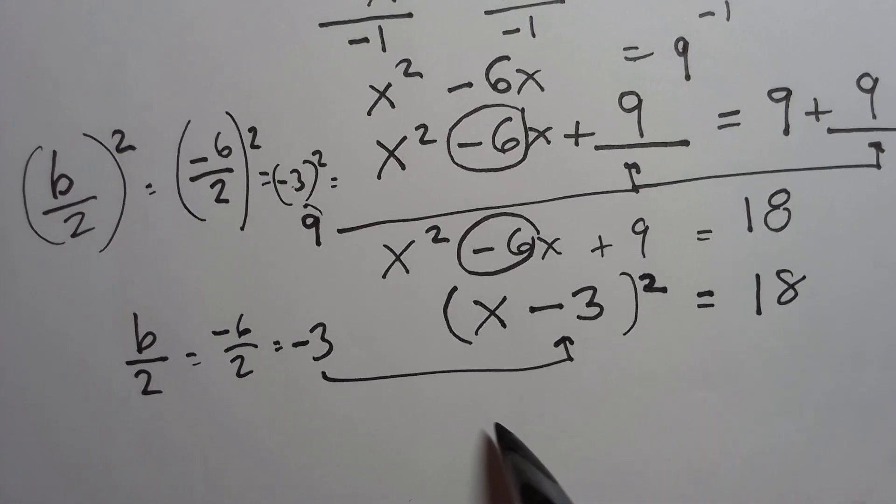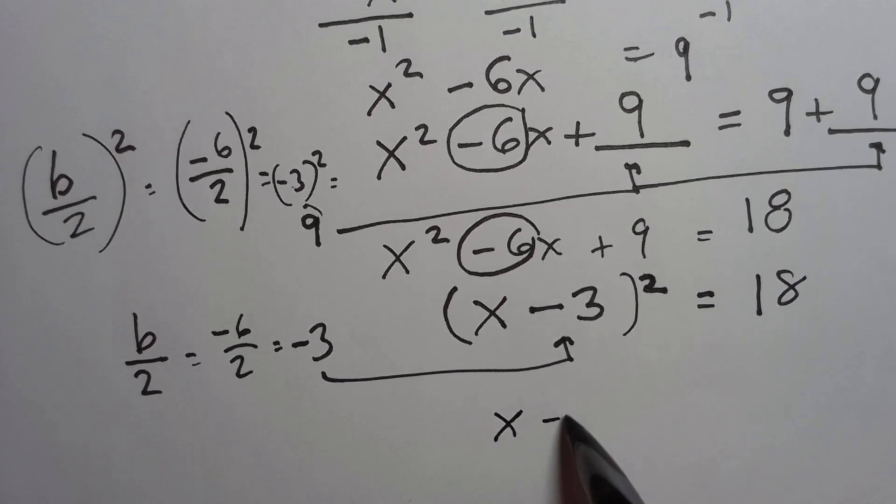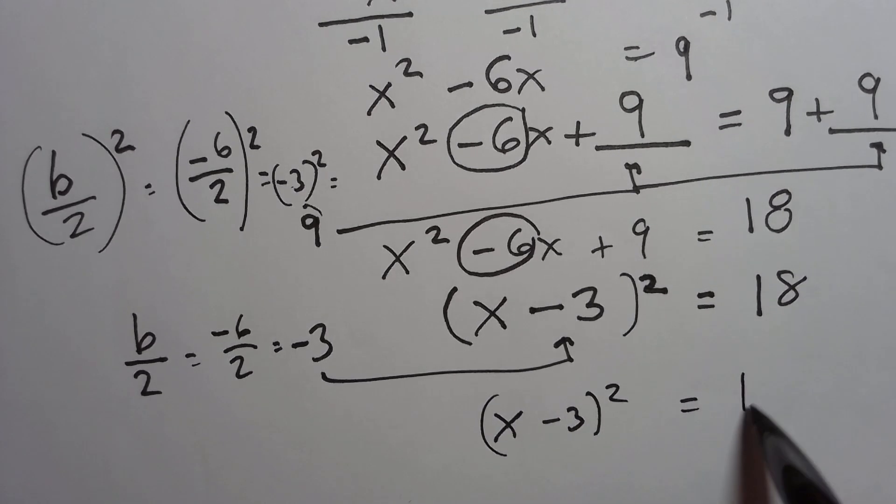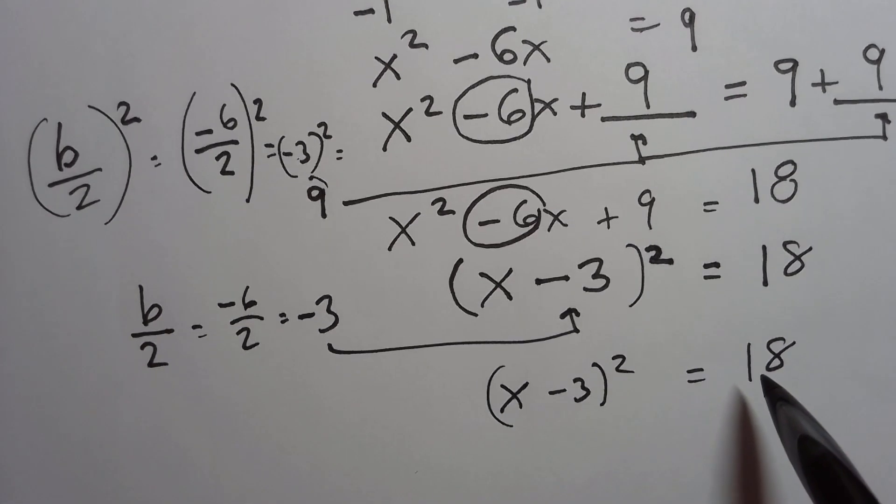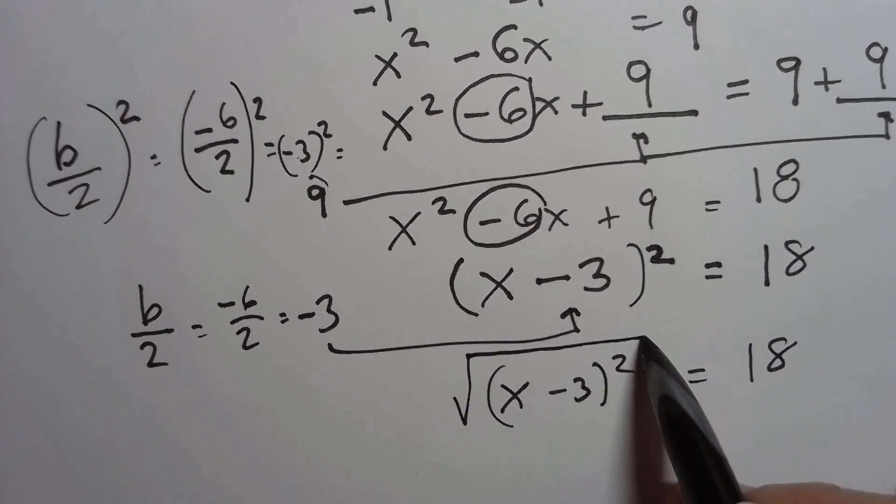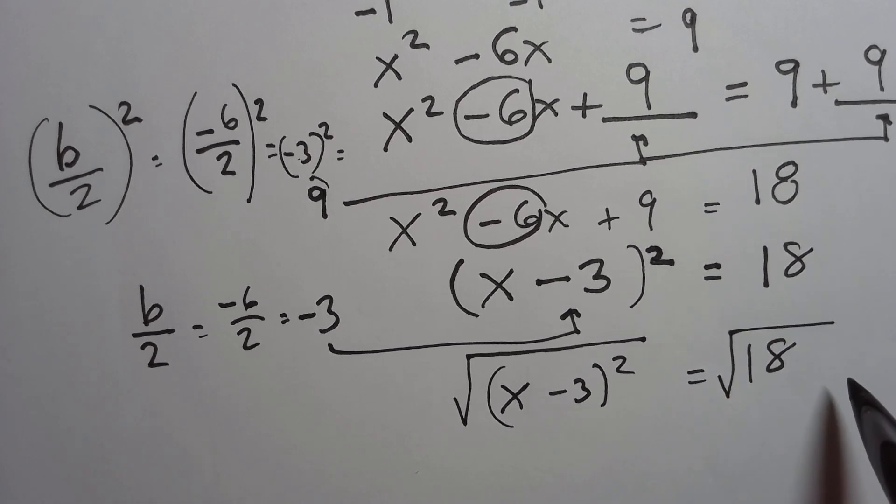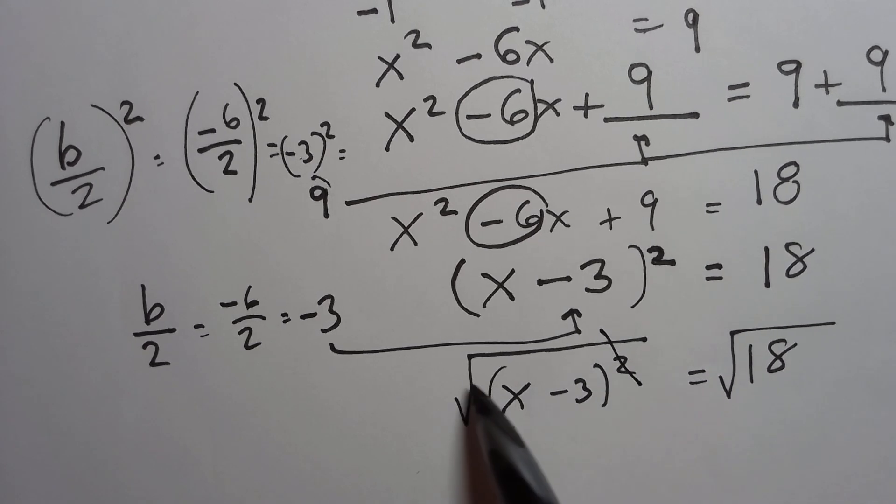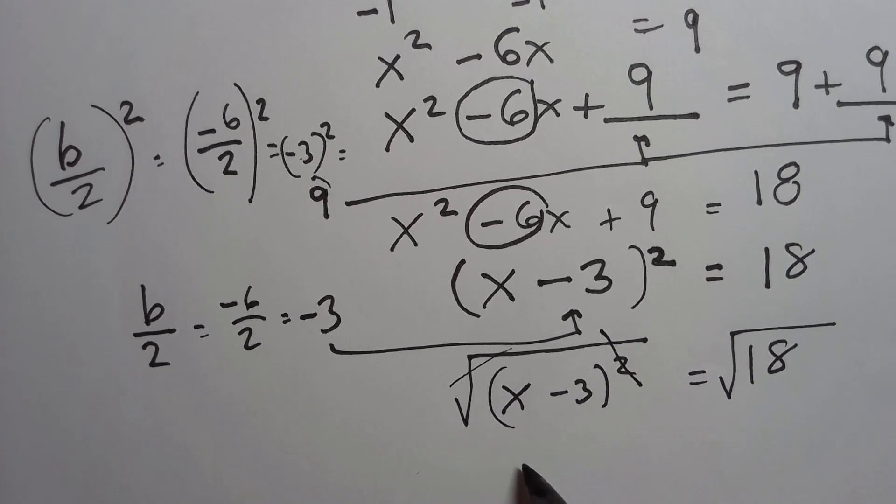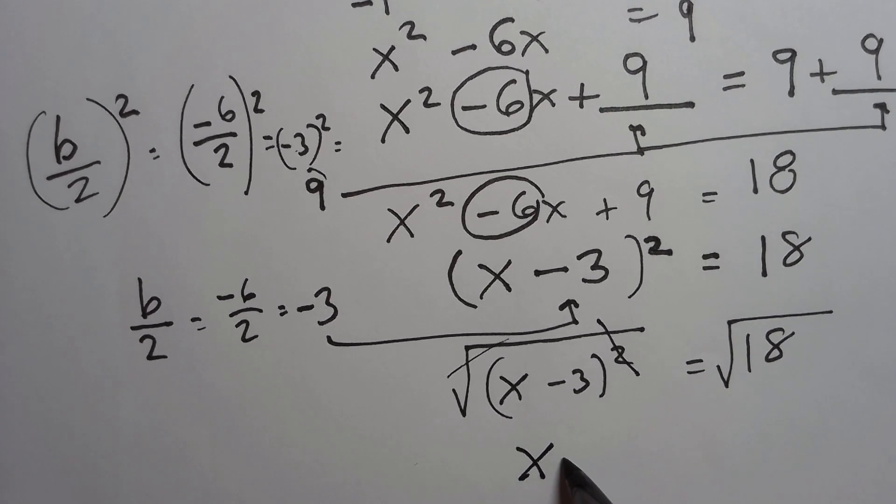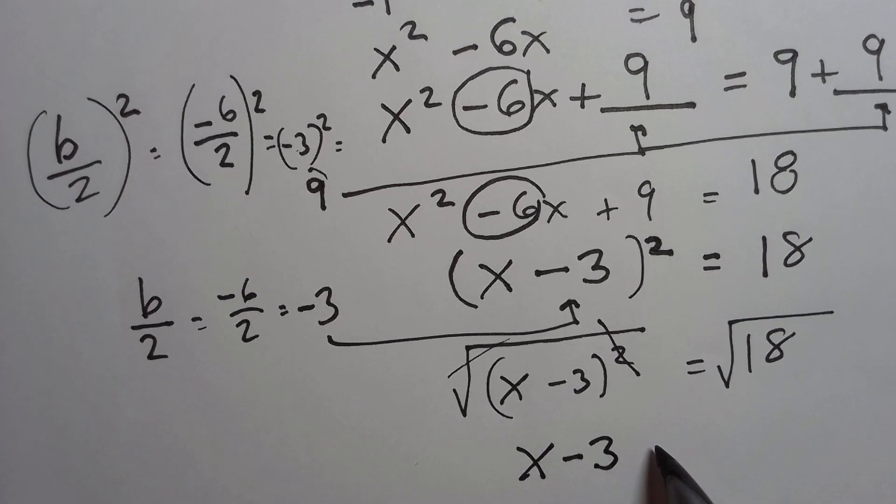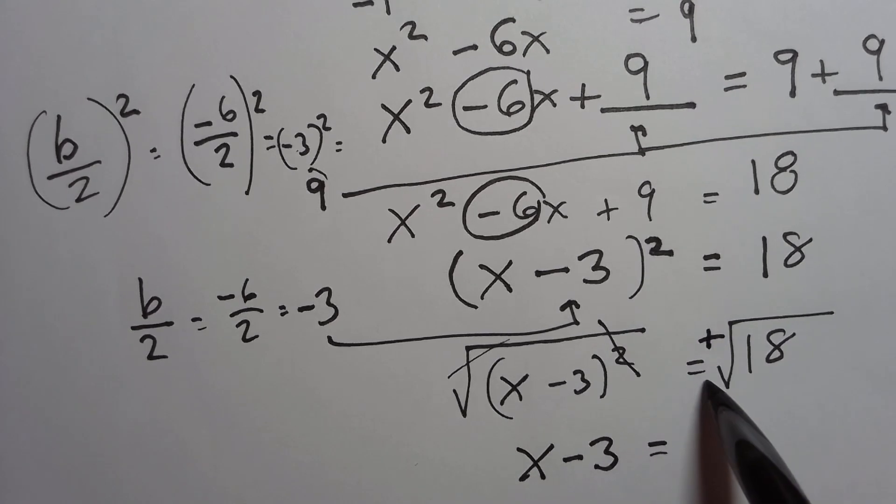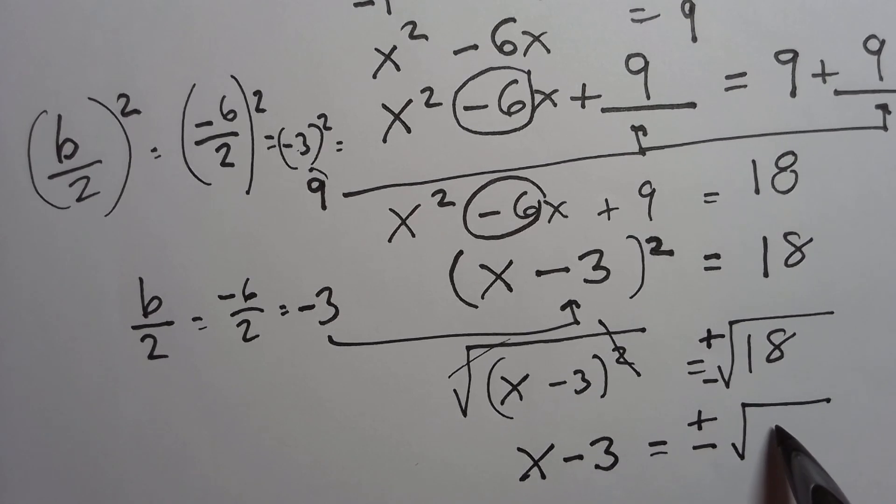The next step in the process, I'm just going to rewrite it. Again, x minus 3 squared is equal to 18. We're going to do the square root property by taking the square root of both sides. Whatever I do to one side, I do to the other. We're going to take the square root of a square, so those cancel out. And we're just left with what's inside on the left side, x minus 3. And on the right side, we're going to take the square root of 18. But let's not forget, we have to do the plus and the minus. Plus and the minus, square root of 18.